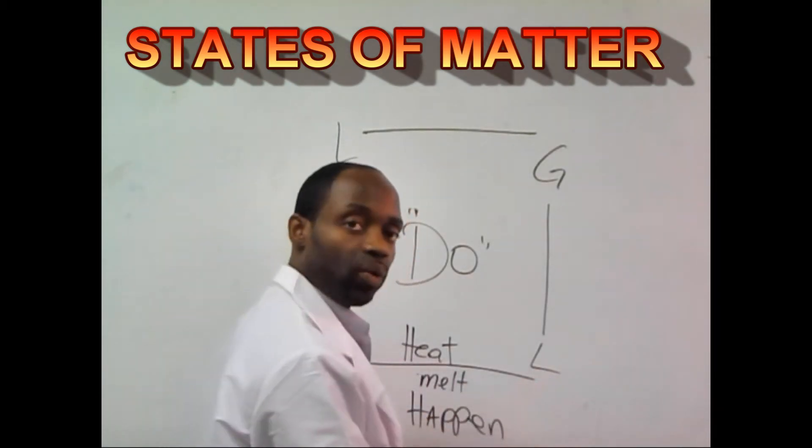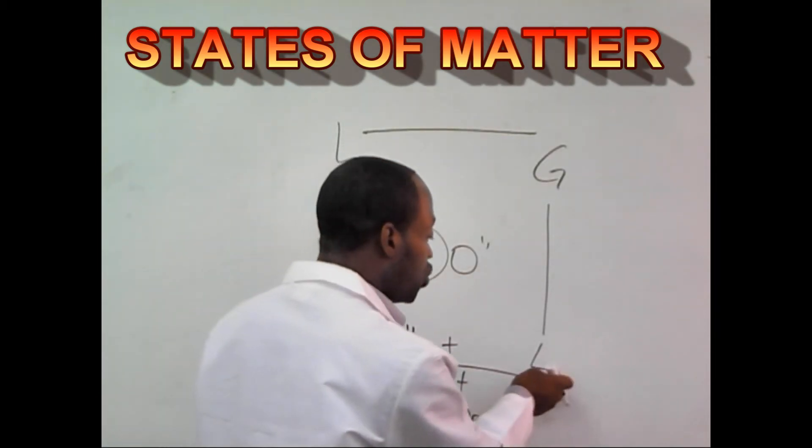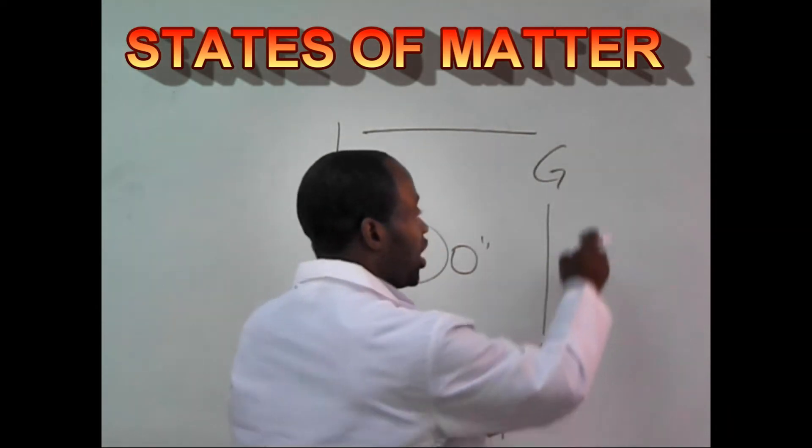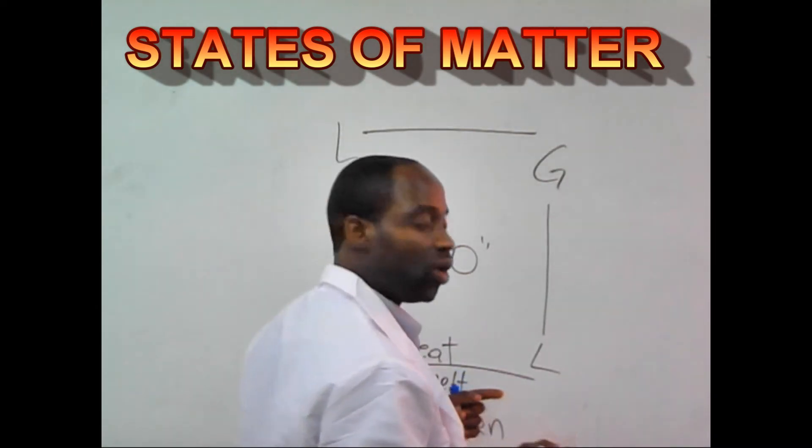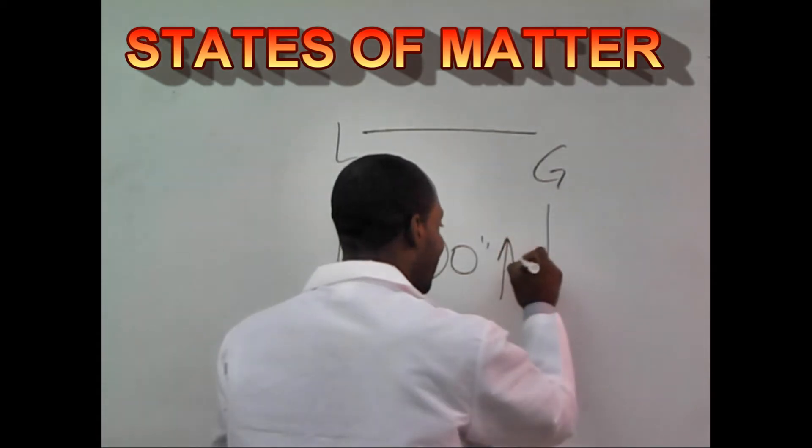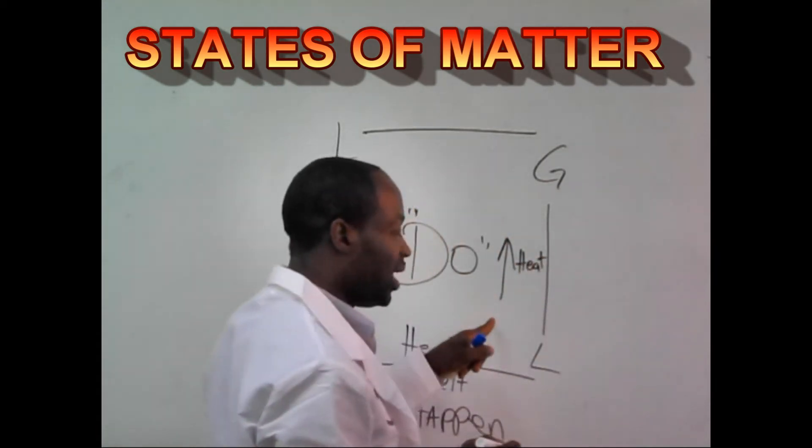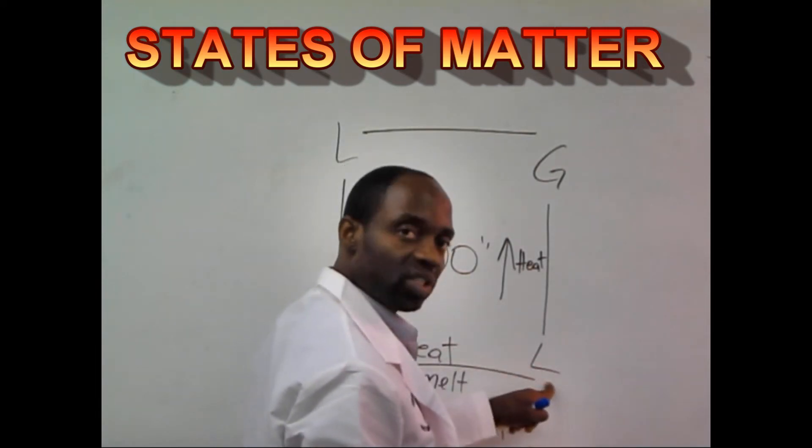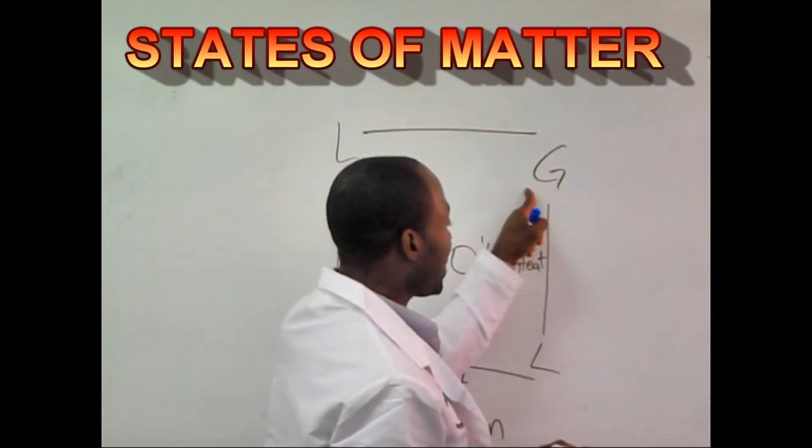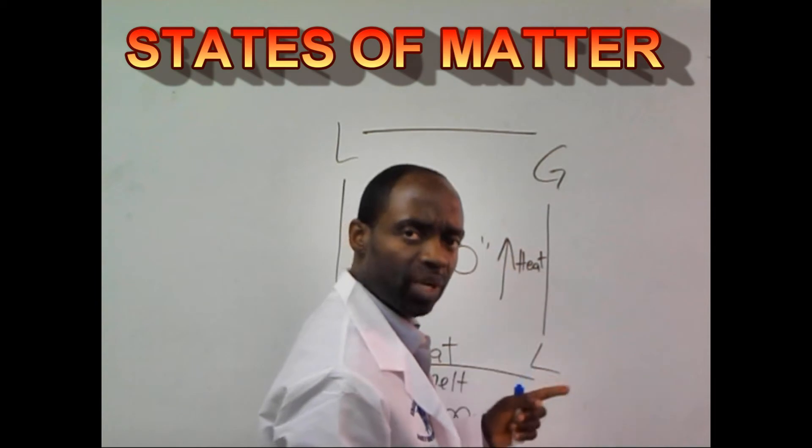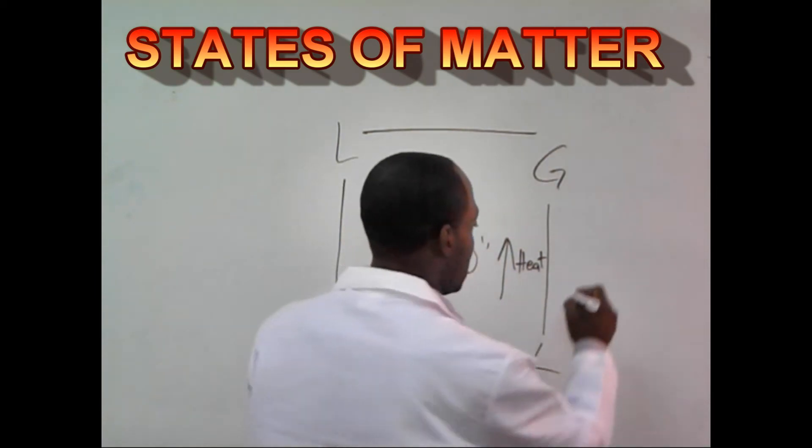So now I'm here at the liquid state. What do I have to do to take my liquid and turn it into a gas? What do I have to do exactly? I'm going to increase the heat. So when I increase the heat, it leads from the liquid state to the gaseous state. But what happens? We call that process evaporation.